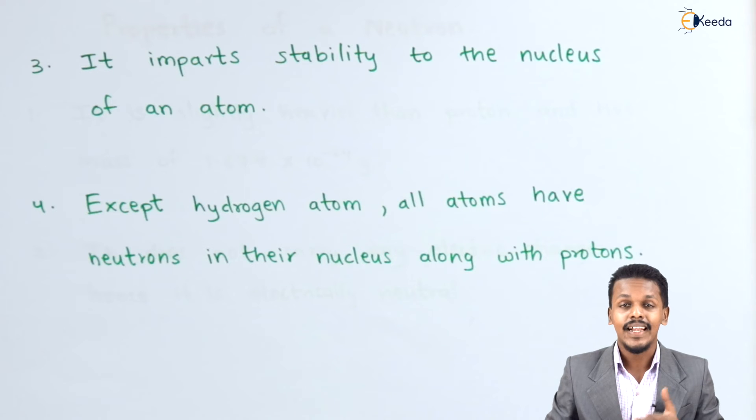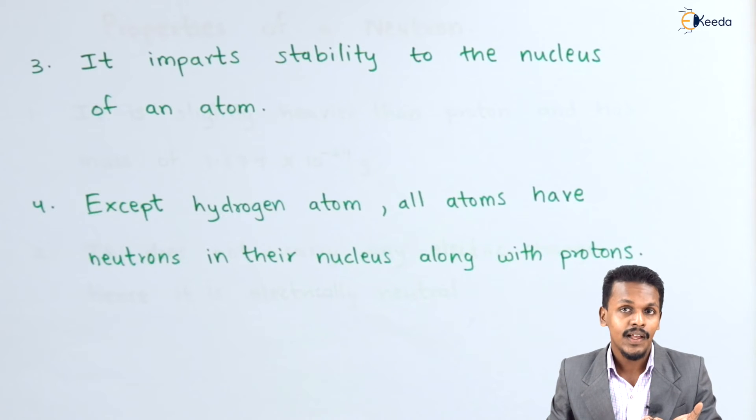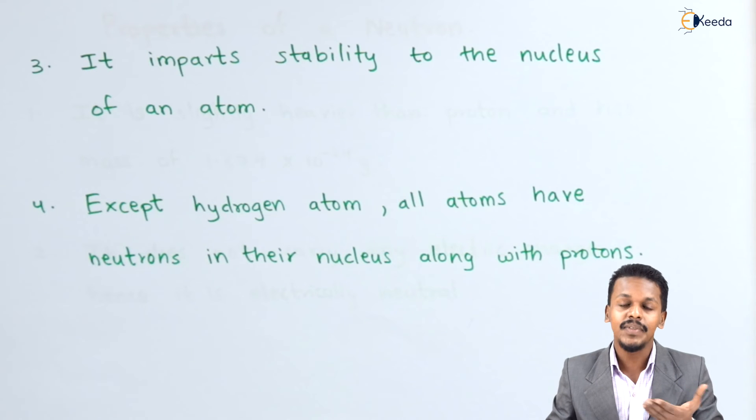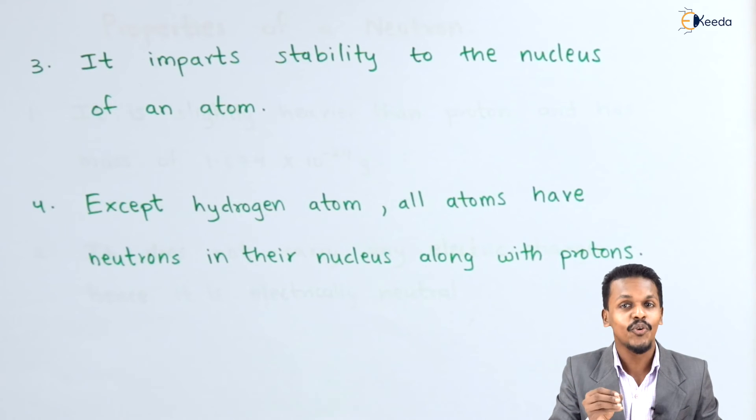This means carbon consists of six protons and six neutrons in its nucleus. All atoms except hydrogen have neutrons in their nucleus, but hydrogen doesn't.